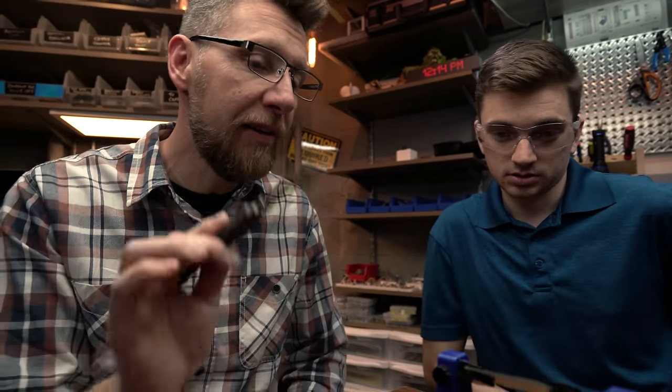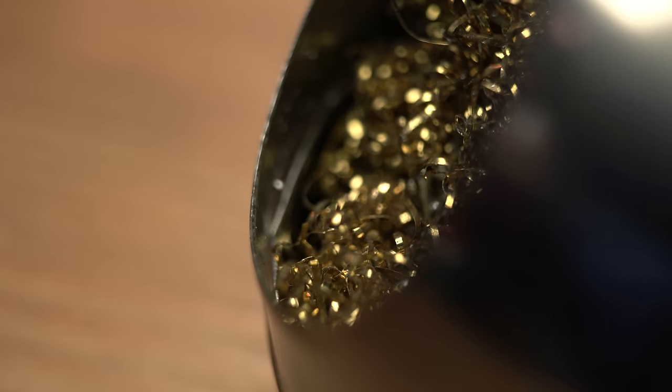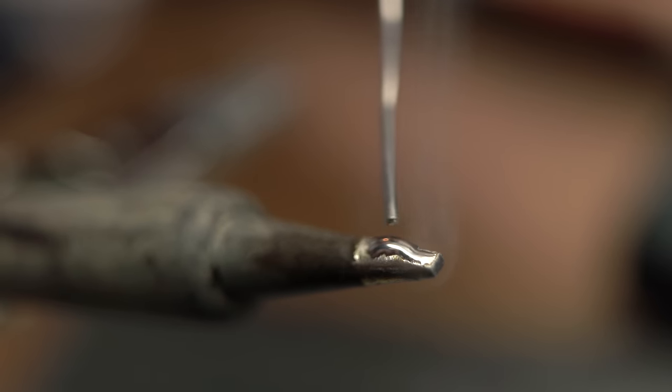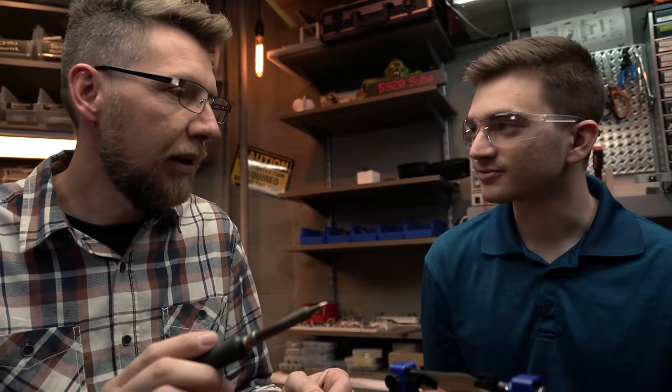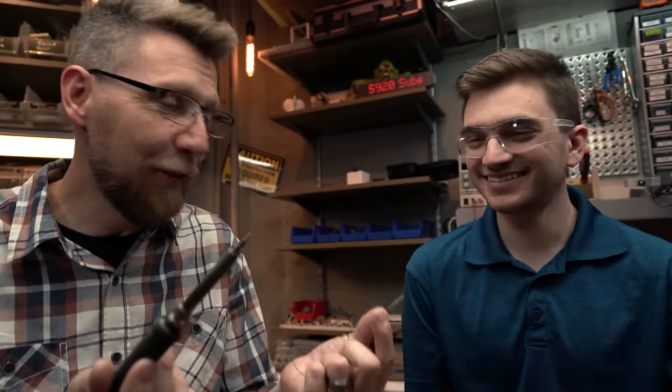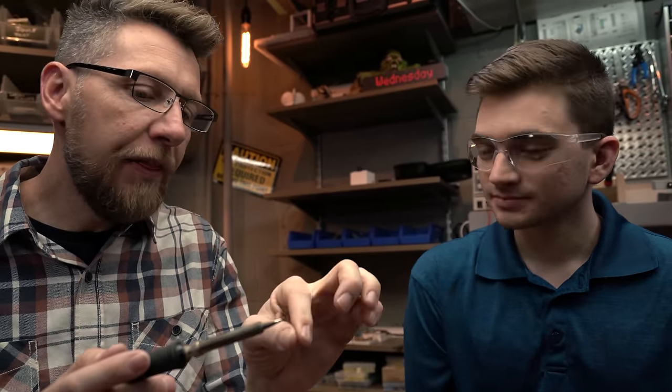All right. First thing we need to do is we need to tin the tip of the soldering iron and what that means is you want to dip it in the gold. Yeah, you dip it in the brass filings or use a wet sponge. Then you want to take a flux core solder and you want to add it to the tip. The idea is that you totally coat the tip in solder and then you're going to wipe it off again. But didn't you just wipe off what you just did? Yes. Why? No, that's a really good question. The flux cleans off the oxidation and then the excess solder kind of pulls away all the junk.